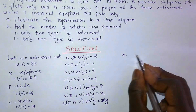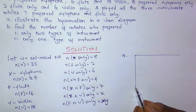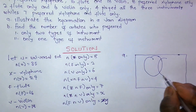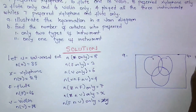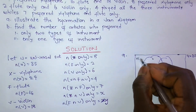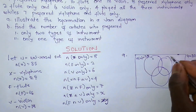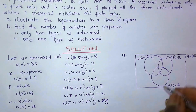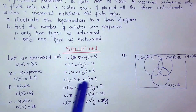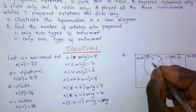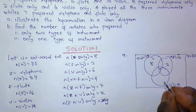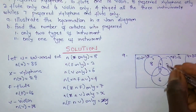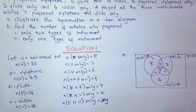For part A, we draw 3 circles. The universal set is 35. The number of xylophone X is 24, the number of flute is 16, and the number of violin is 18. How many students preferred all 3 instruments is 4. We have 8 for xylophone only, 2 for flute only, and 6 for violin only. We have 7 representing xylophone and flute only — 7 goes here. X is placed here and Y is placed there. That's the A part of the question.